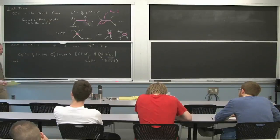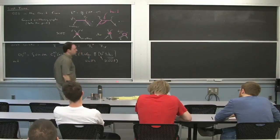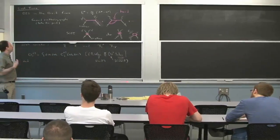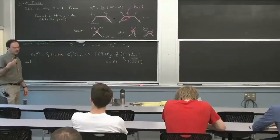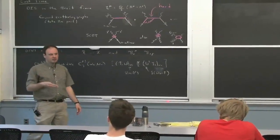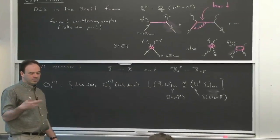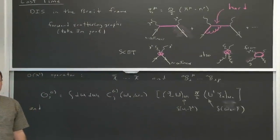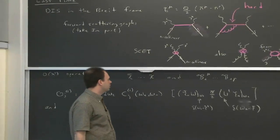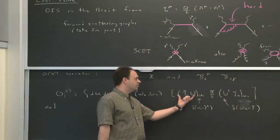So let me remind you what we were talking about last time. We were discussing the example of DIS in the Breit frame. The way we led into this example is we talked about renormalization group evolution of the heavy-light current. We saw that it had this cusp anomalous dimension, but it was a multiplicative renormalization group evolution. And that happened because we only had one collinear gauge invariant object in our operator.